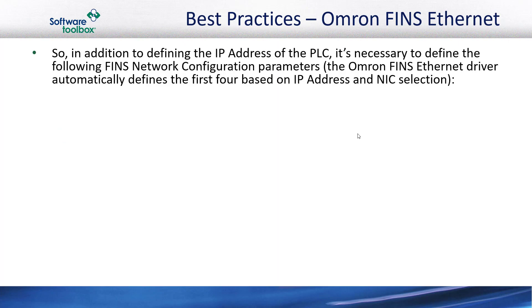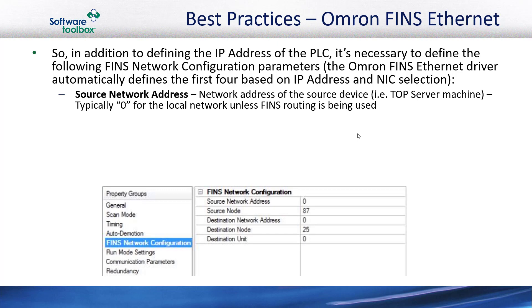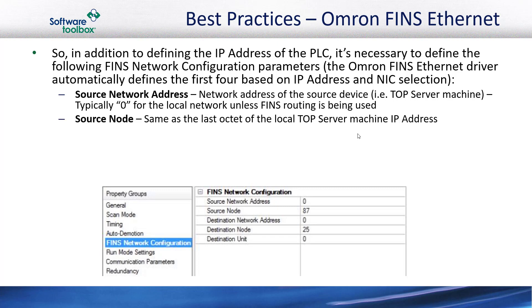Continuing with our best practices, in addition to defining the IP address of the PLC when configuring TopServer, it's necessary to define the following FINS network configuration parameters. The Omron FINS Ethernet driver in TopServer automatically defines the first four based on the IP address and the NIC selected in the configuration. The first FINS network configuration parameter is the source network address — that's the network address of the source device, which in our case is the TopServer machine running the Omron FINS Ethernet driver. Typically zero is used for the local network unless you're using FINS routing to another Omron controller. The source node is the same as the last octet of the local TopServer machine IP address.